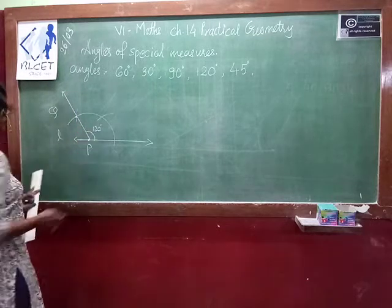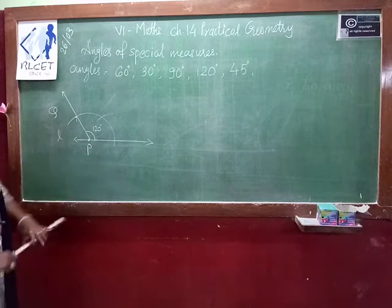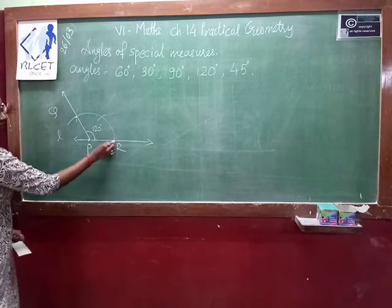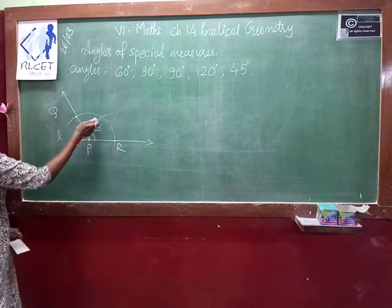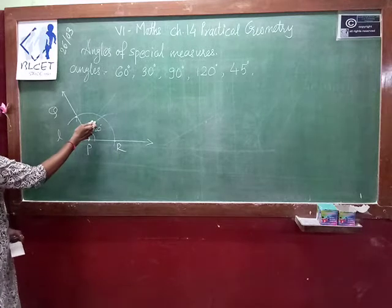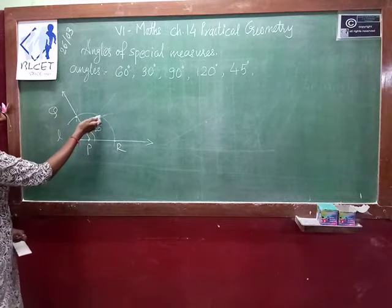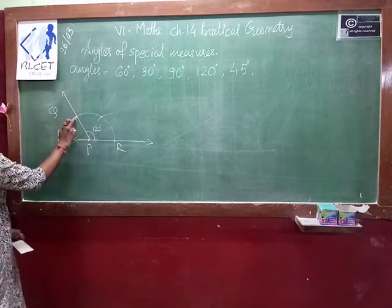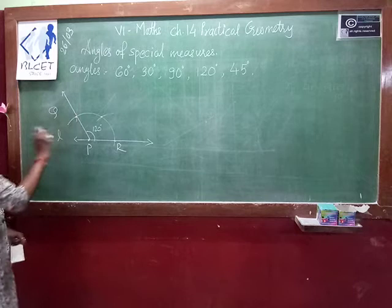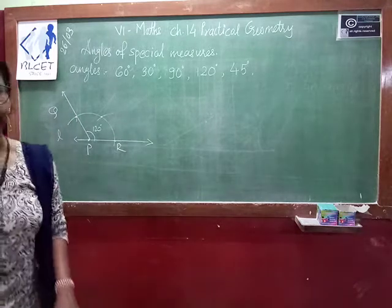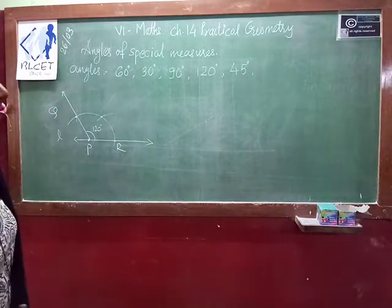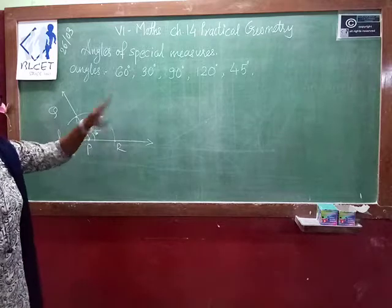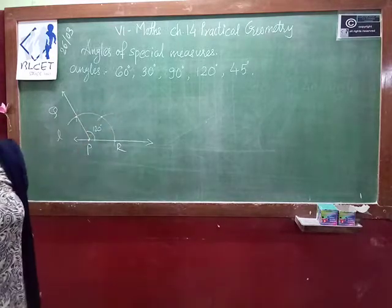It's very easy. Take your pointer, draw the first arc — that is your 60 degrees. From there draw a second arc — that gives you 2 times 60, which is 120 degrees. This is how we can construct 120 degrees.